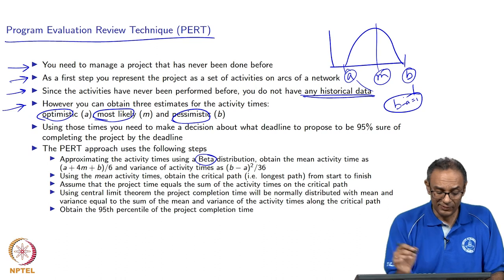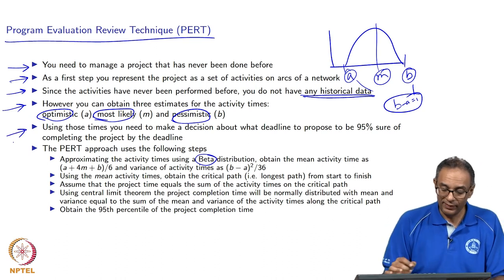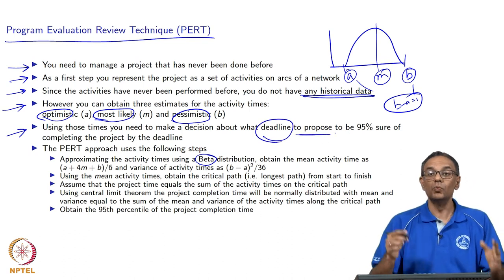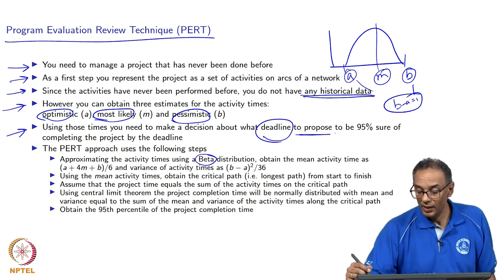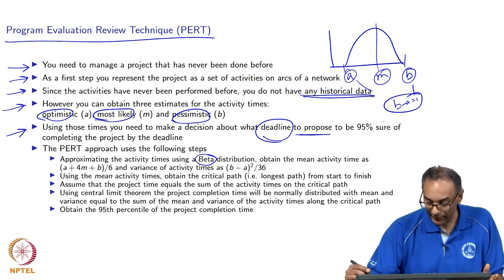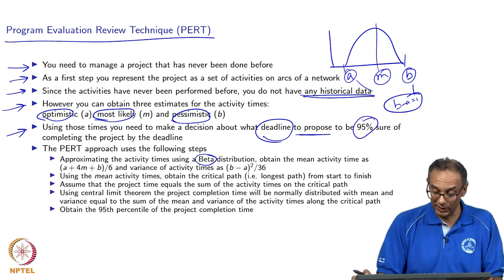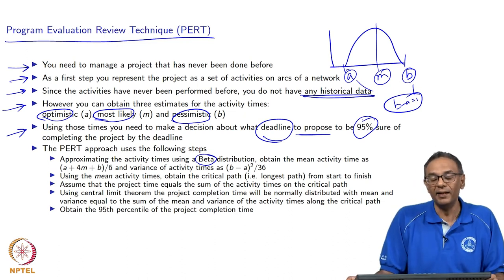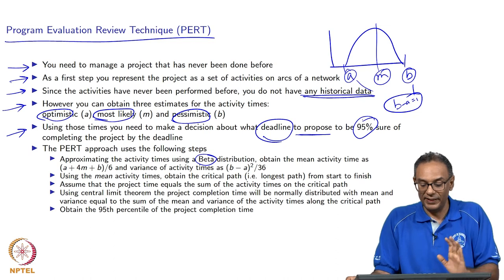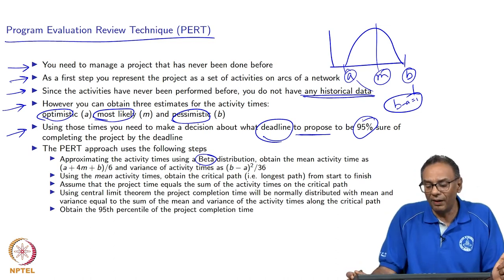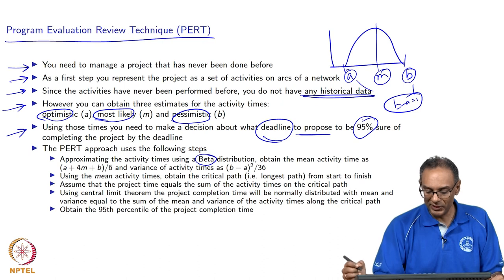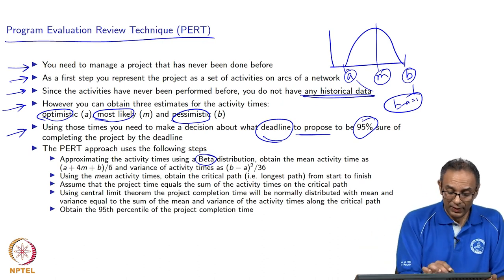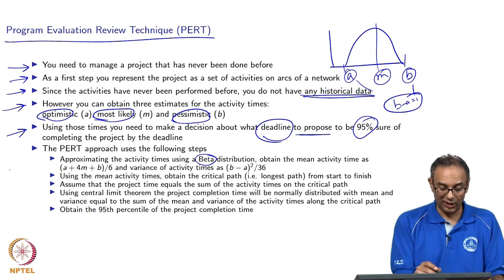We need to decide what deadline to propose — what to tell the client about when the project will be completed. We want to be 95 percent sure of completing the project by the promised date. This is important: we want to provide good service to our client and have a very high probability of finishing on time.